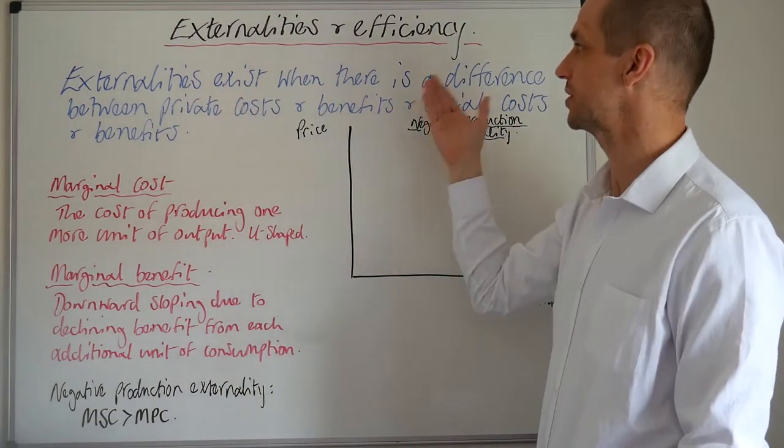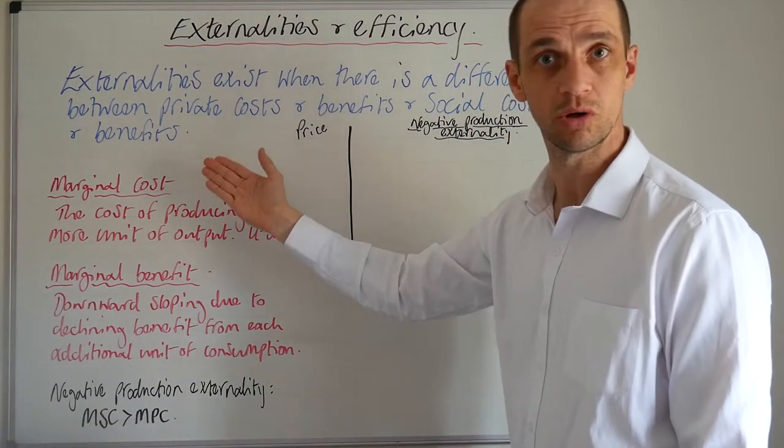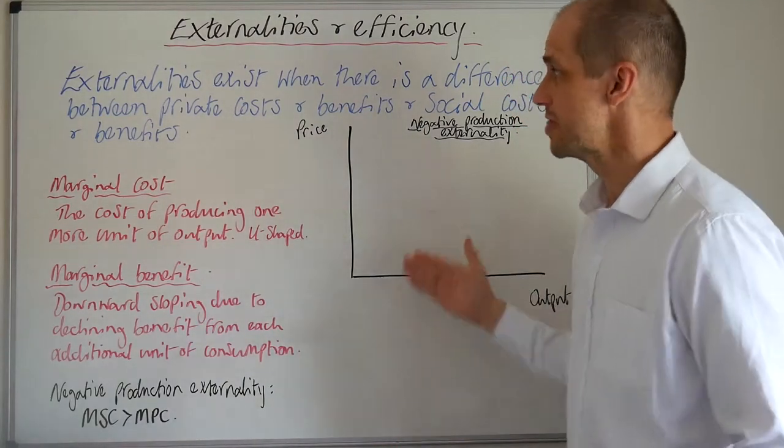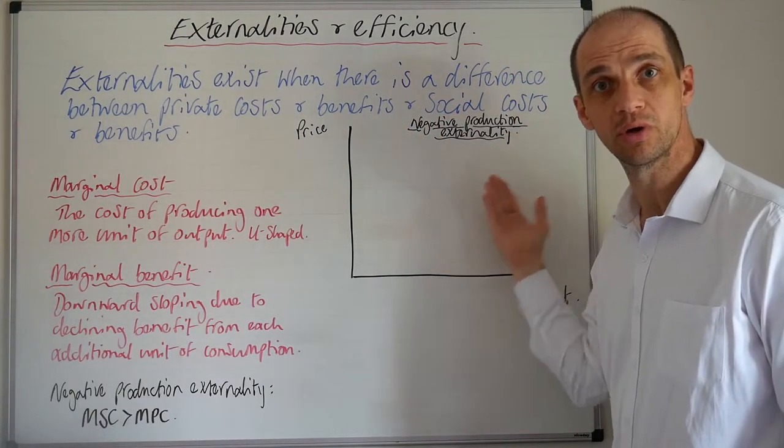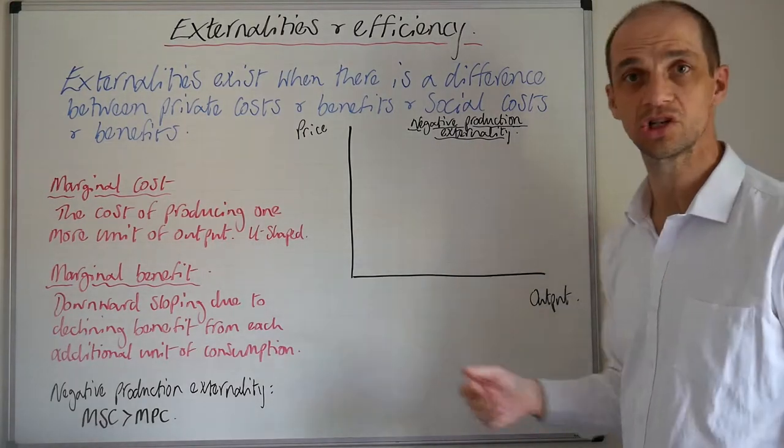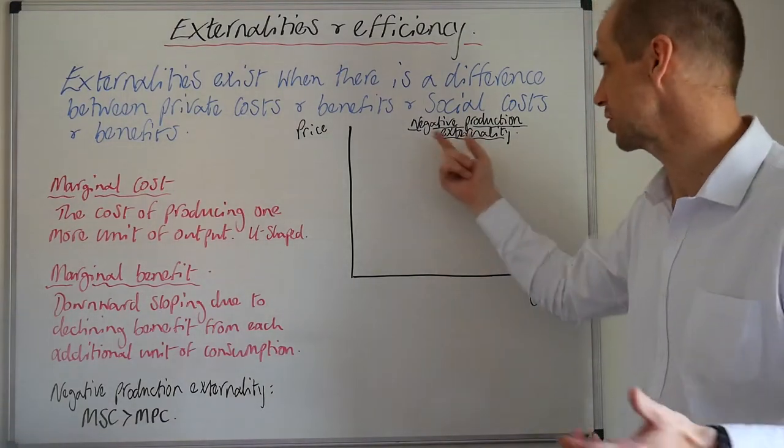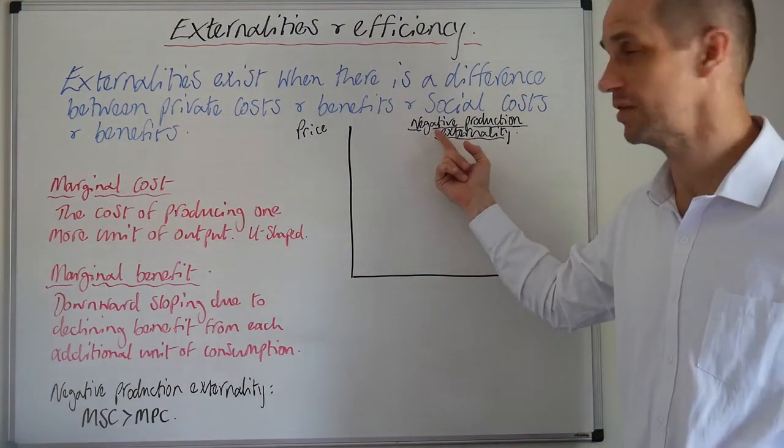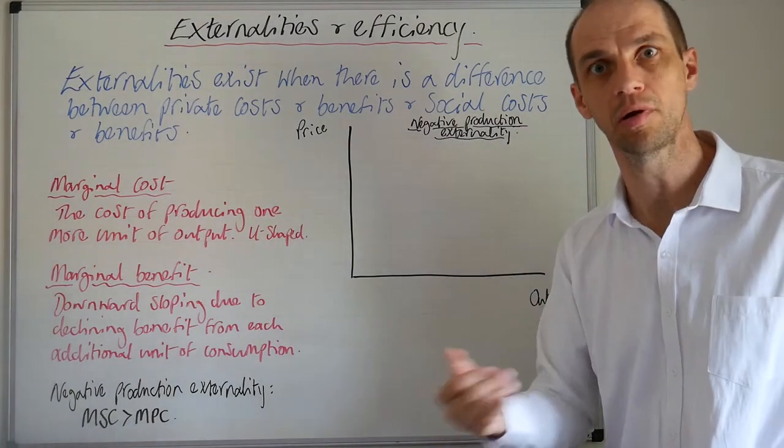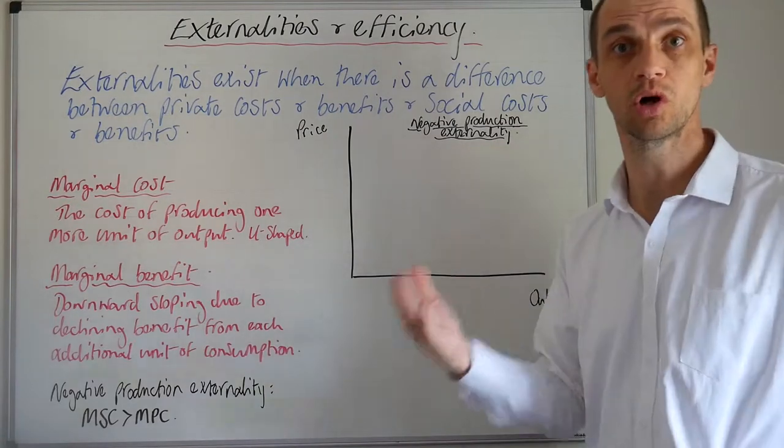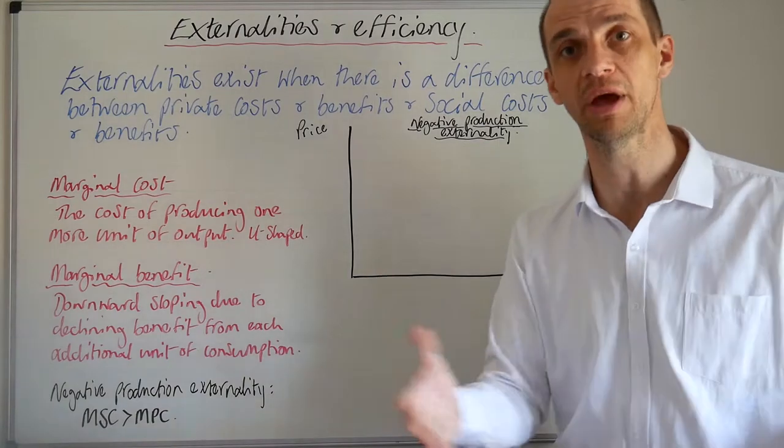Externalities exist when there is a difference between private costs and benefits and social costs and benefits. We'll see this in a very clear example in a diagram in just a moment for negative production externality. From that term, we can actually see that something negative is happening to society as a result of production taking place. And so there is an external cost, because it's a negative, it's not a benefit.